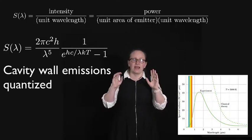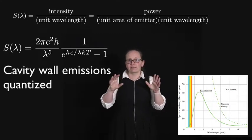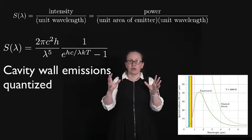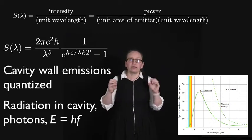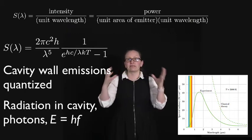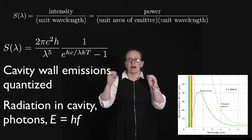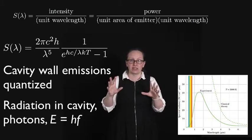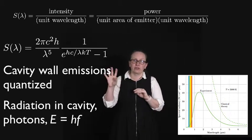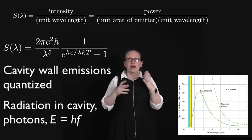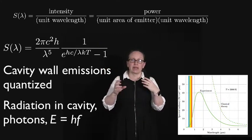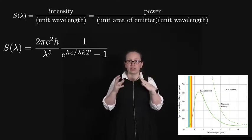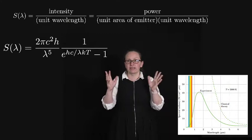He assumed that the energies of the cavity wall atoms that are emitting the radiation are quantized. And also that the energies of the electromagnetic radiation within the cavity are quantized in the form of photons with an energy E = HF. Though they weren't called photons back then. In his theory Einstein could also explain why atoms emit and absorb the radiation that they do. And we'll be looking at this later.